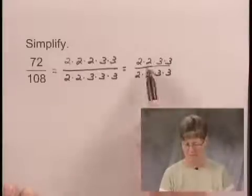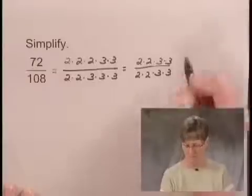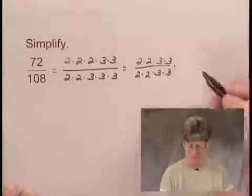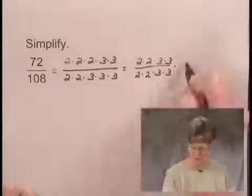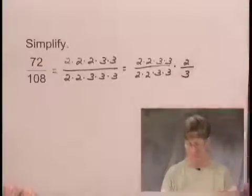So I can write this as 2 times 2 times 3 times 3 over 2 times 2 times 3 times 3 times the numbers that are left in each place. There is a 2 left in the numerator, and there is a 3 in the denominator.